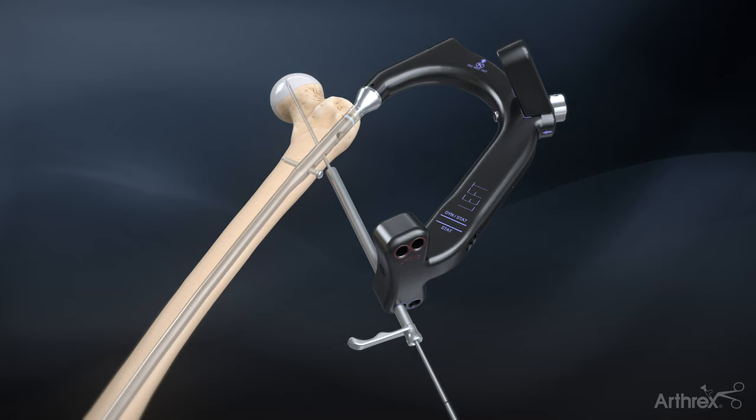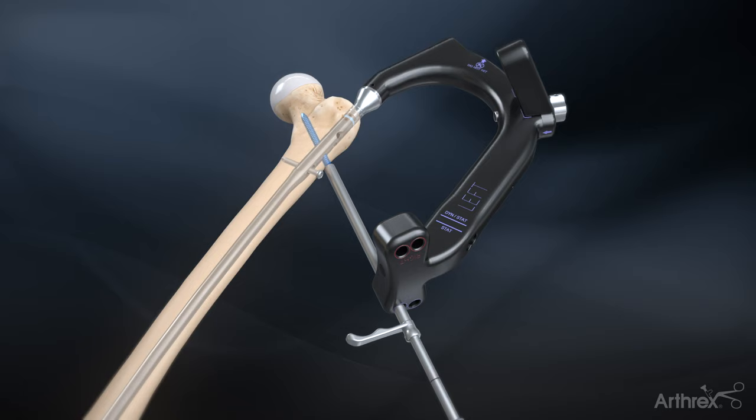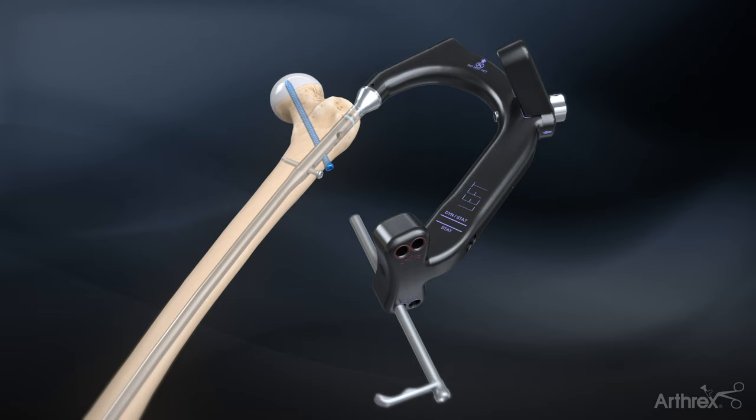Remove the guide pin and insert the 6.5 mm fully threaded cancellous screw assembled on the captured hex driver until the black laser line on the driver is flush with the end of the sheath. Once the screw is fully inserted, remove the screw sheath.